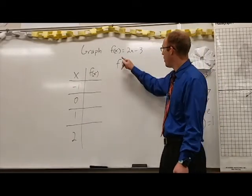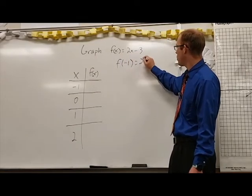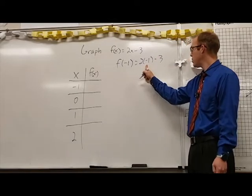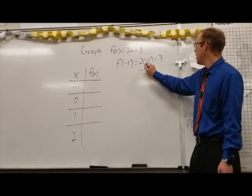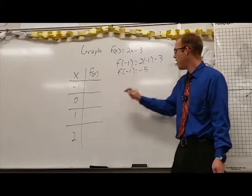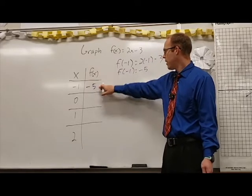So our first x value is -1. So f(-1), we're going to put that in over here, equals 2 times -1 minus 3. 2 times -1 is -2, minus 3 gives us -5. So f(-1) equals -5 and that gives us our y value or f(x) value over there.